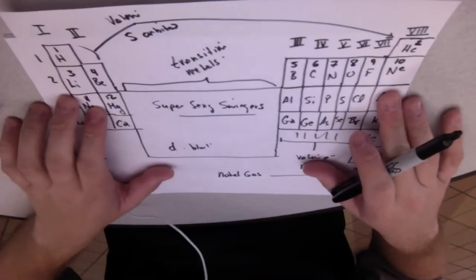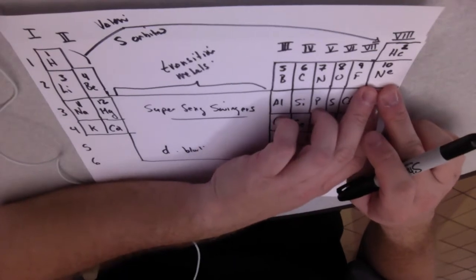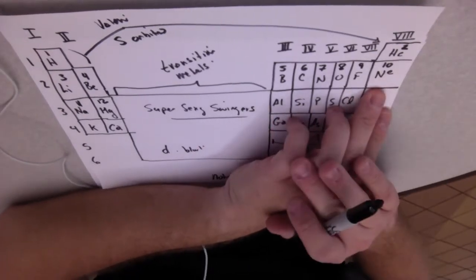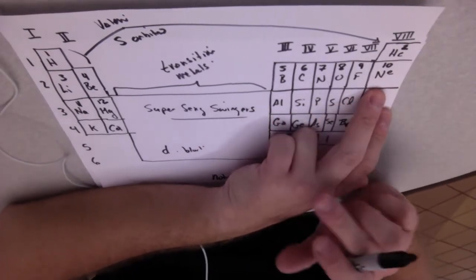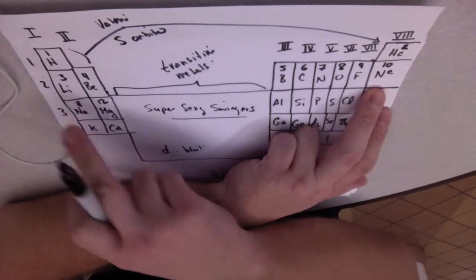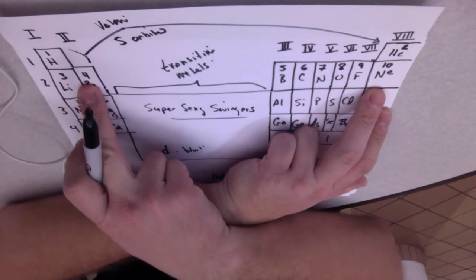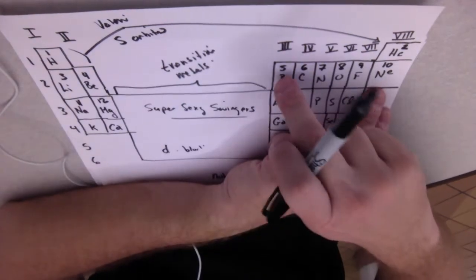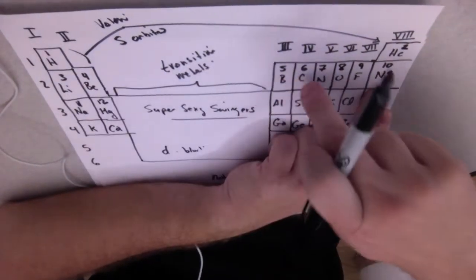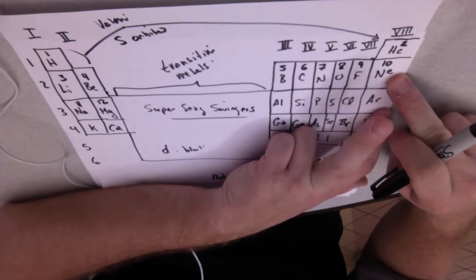So if we look at neon, for example, how many total electrons are we dealing with in that second shell? Well, I've got an electron here, an electron here, which occupy the s orbital, the 2s orbital — that's two electrons — and then three, four, five, six, seven, eight.